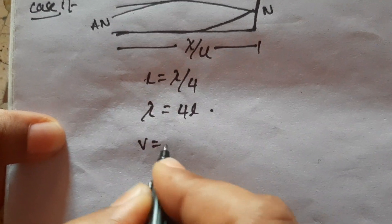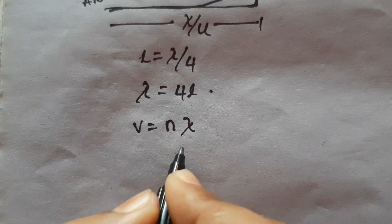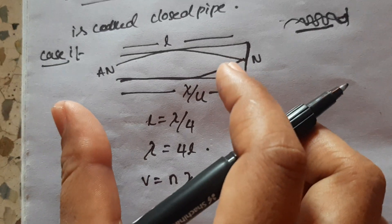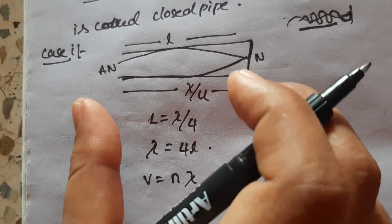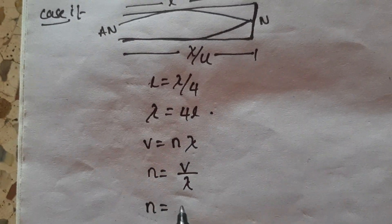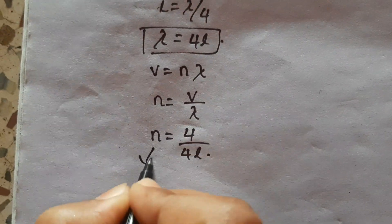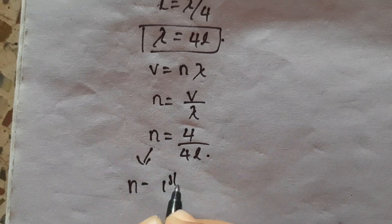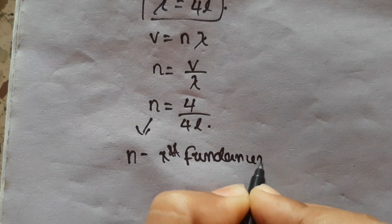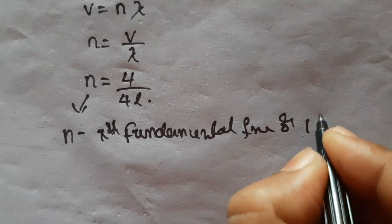Speed of a wave equation: V is equal to N times lambda, where N is the frequency of the wave. So N is equal to V by lambda, which gives N equal to V by 4L. This N is the first fundamental frequency, also called the first harmonic.